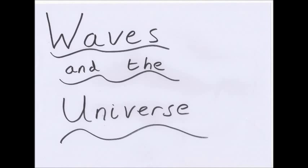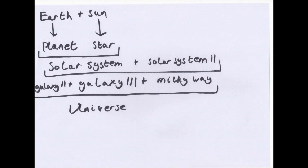Hello and welcome to my next GCSE video on waves and the universe. Now the universe — what is it made up of? You have planets like the Earth. Near us we have Mercury, Venus, Earth, Mars, Jupiter, Saturn, Uranus and Neptune. Pluto is a dwarf planet.